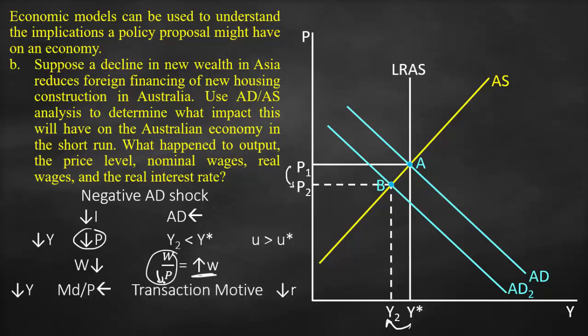Because of lower output, there is lower income, so the demand for money will be lower and will shift to the left — due to the transaction motive, people have less income, spend less, and therefore demand less money. This results in a lower interest rate. Additionally, because we have a lower price level, the real money supply (M/P) will be higher, meaning money supply shifts to the right.